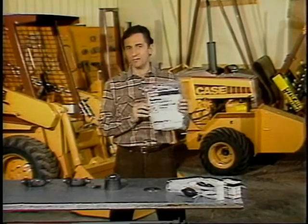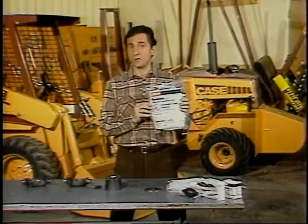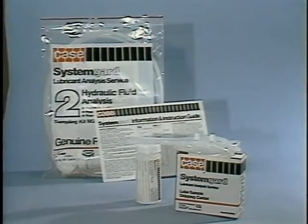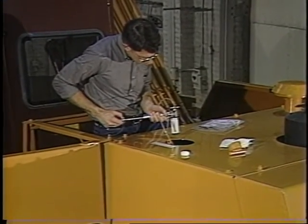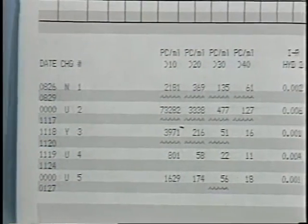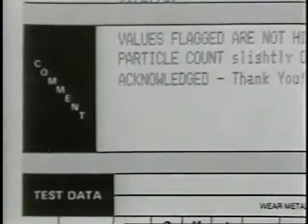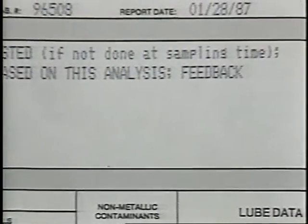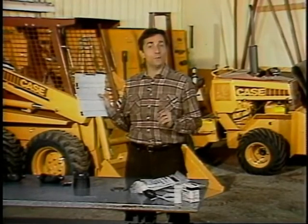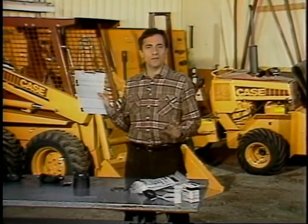The best and most reliable way to monitor particle contamination is to have the oil professionally analyzed. Case dealers have a service called System Guard, which measures the particulate contamination levels in hydraulic oil. Using System Guard kit number two — the one for hydraulic and transmission analysis — take a sample from the hydrostatic or hydraulic oil in your machine and send it to System Guard where it will be analyzed. A printed report is sent back to the customer and dealer, giving a detailed look at the particulate contaminant level found in the oil. The report is easy to read and gives corrective actions if necessary. If samples are taken regularly, it can set up a trend analysis, tracking the condition of your machine through its life cycle. This is the best and most reliable method for measuring contaminant levels.